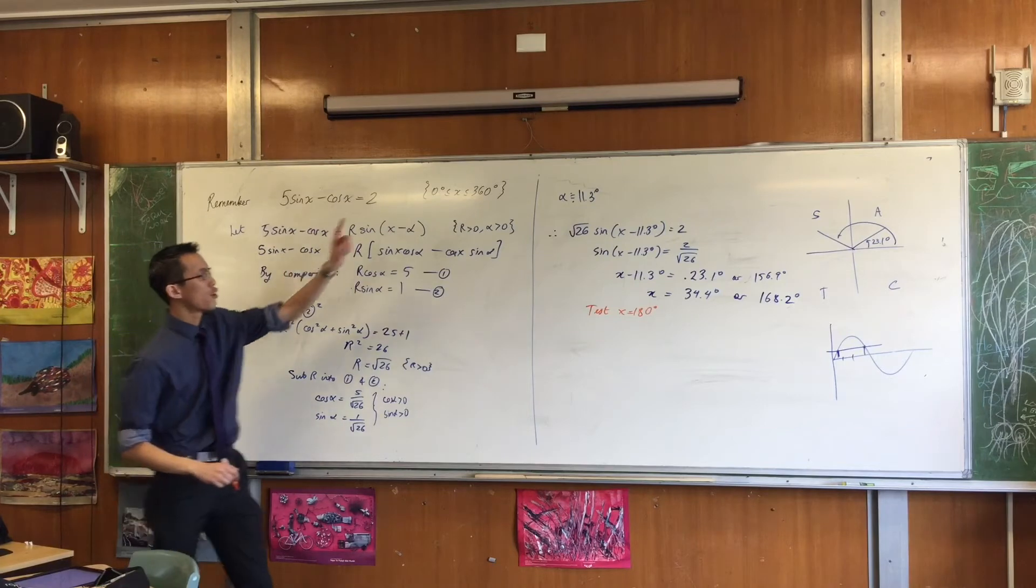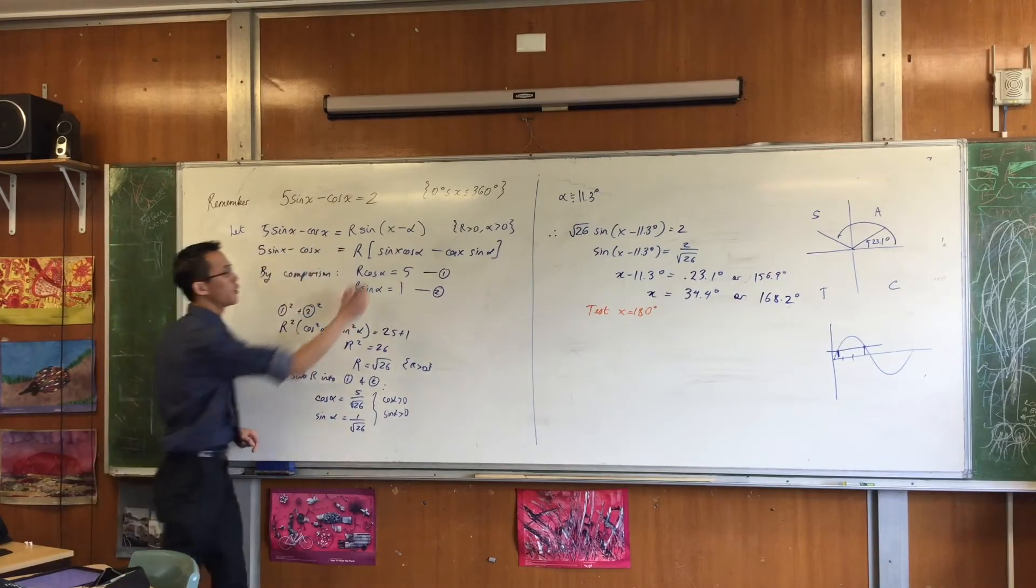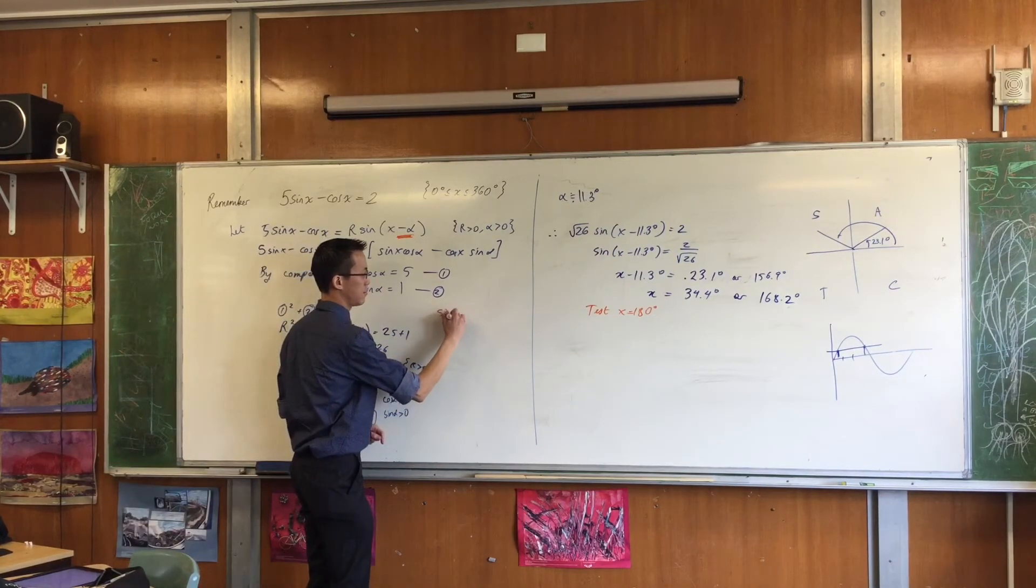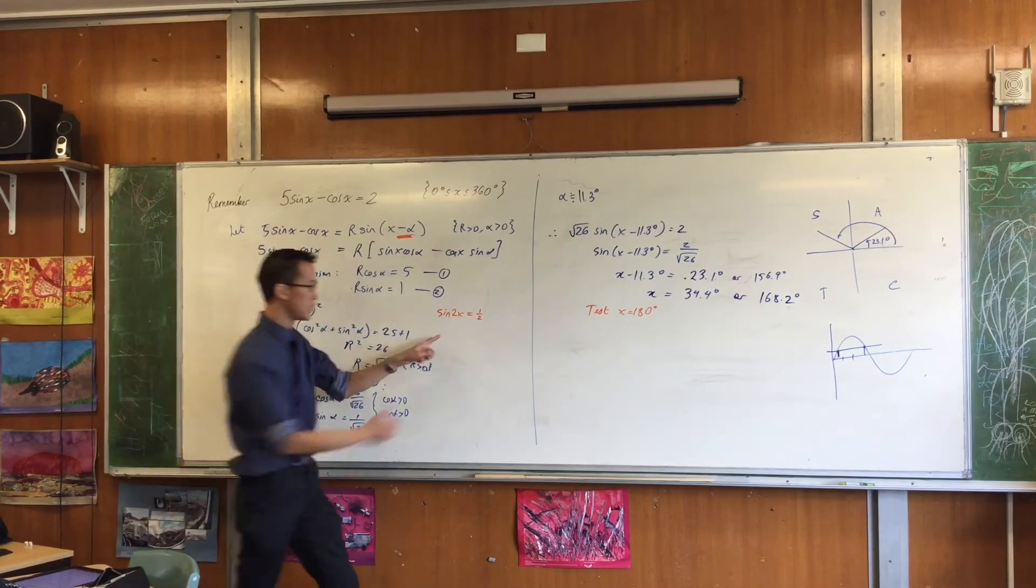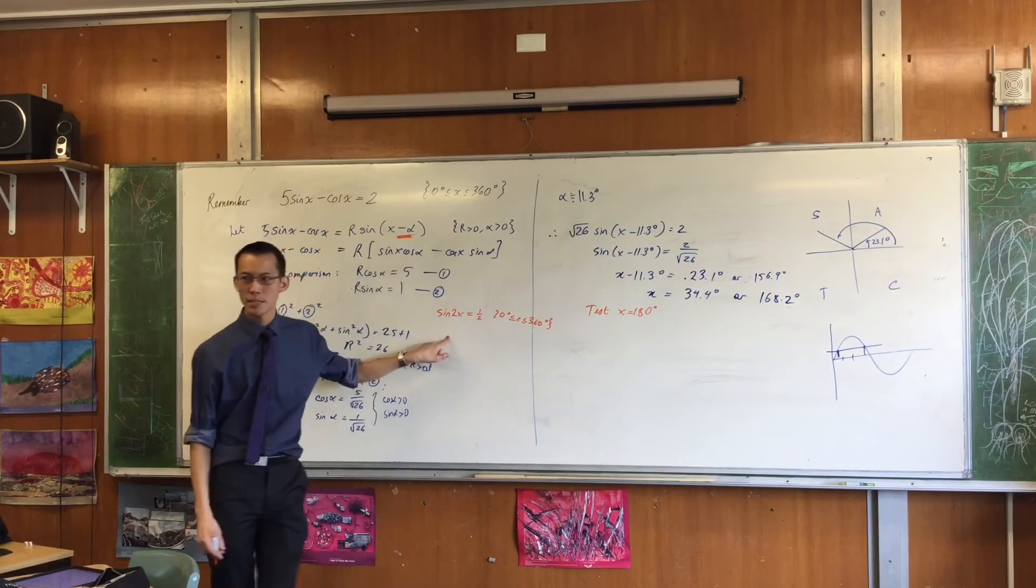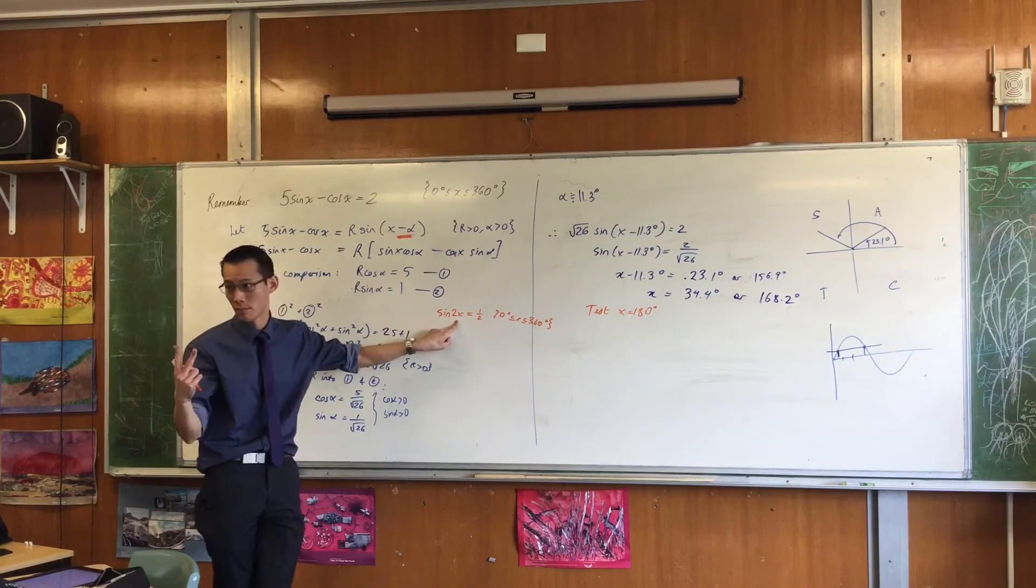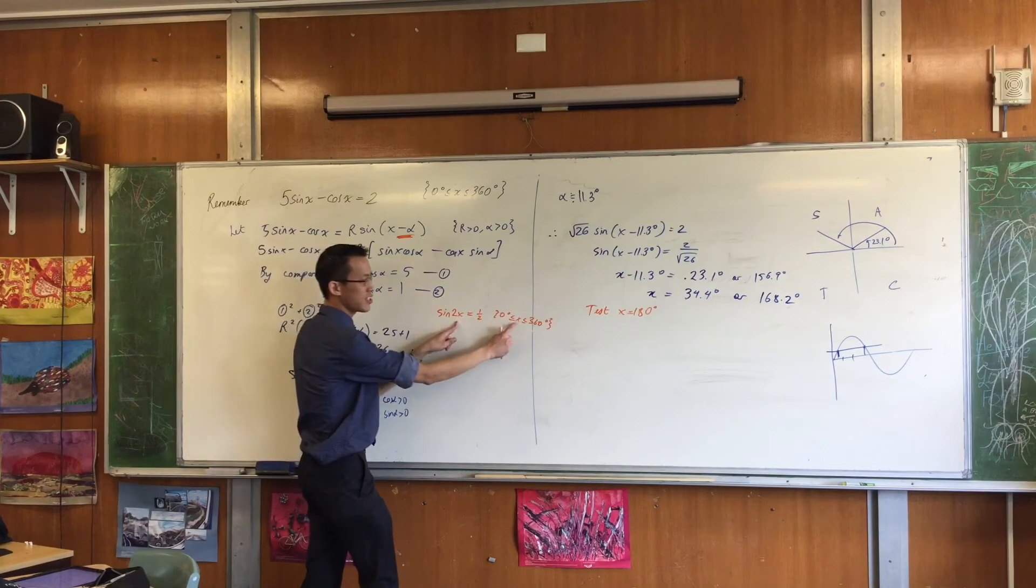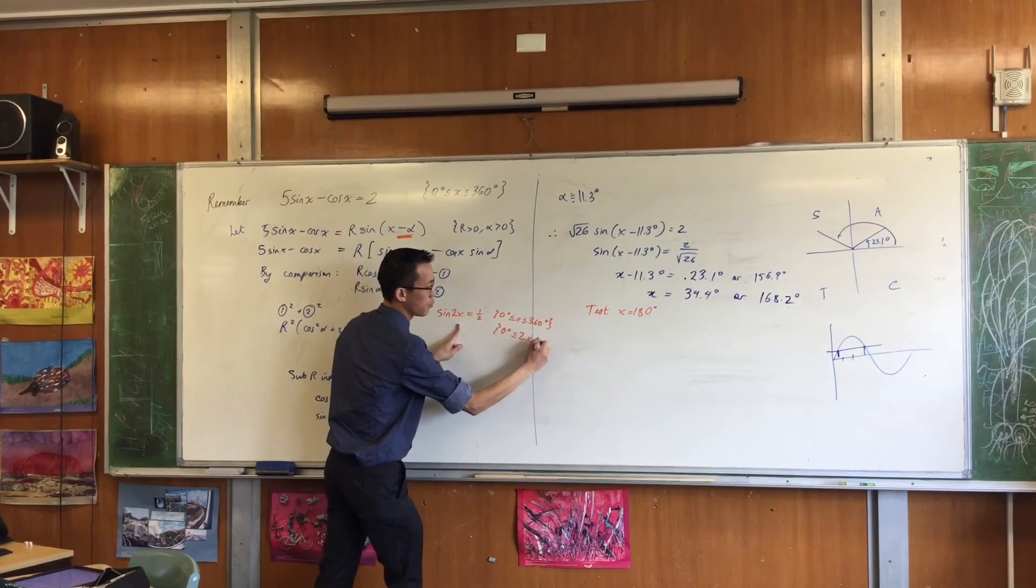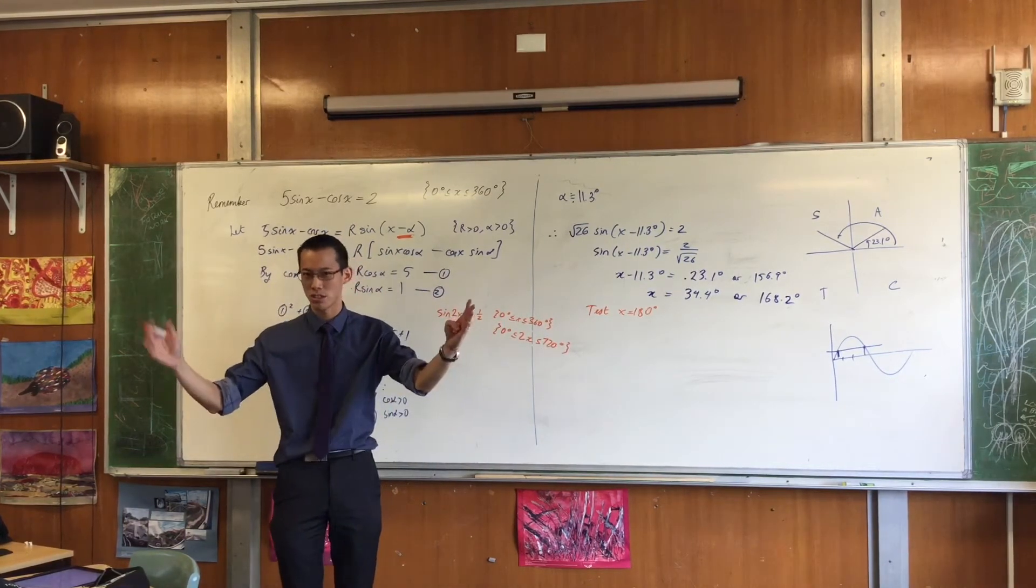But auxiliary angle also has a disadvantage. Look on the board. Do you see I've got a domain up here? 0 to 360, which is normal. However, by using auxiliary angle, we've shifted things. You see that? Do you remember when I told you, okay, let's do a simple one: sin(2x) = 1/2. If I actually solve this from 0 to 360, how many solutions do you expect? Four. You should expect four, because usually there's two, but I've made it wave up and down twice as often.